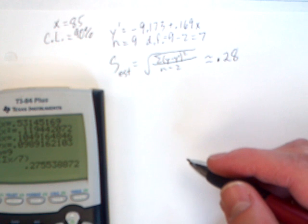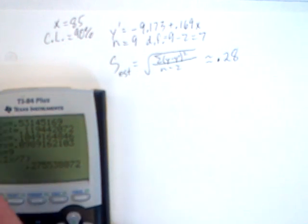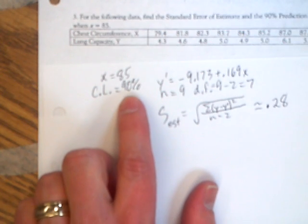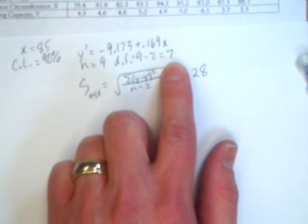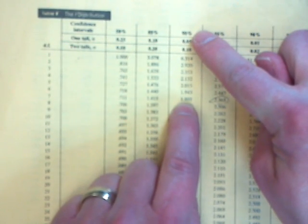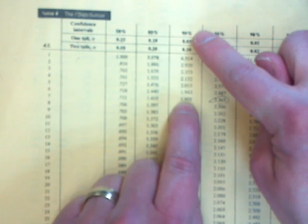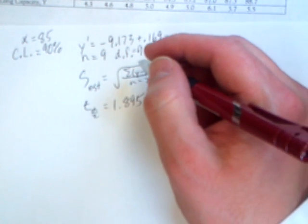Now we need to look up the T sub alpha over two using our T distribution chart, and you'll notice that we need to use our percentage that we're given. So 90% chooses our column, our degrees of freedom choose our row, and so that would look like the following. Here's seven, there's 90%, and they meet at 1.895. So 1.895 is what we write down for our T sub alpha over two.